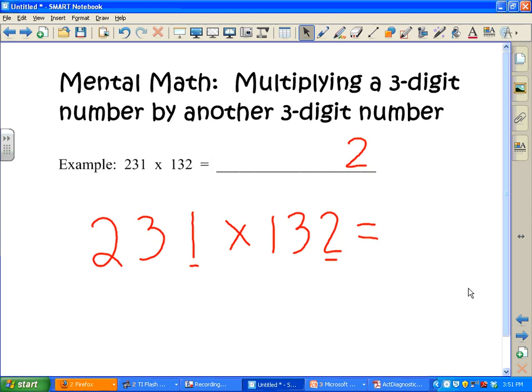And then the next step, I'm going to take the last two digits here, 31, and the last two digits here, 32, and I'm going to multiply the outer and the inner.